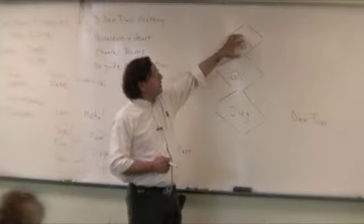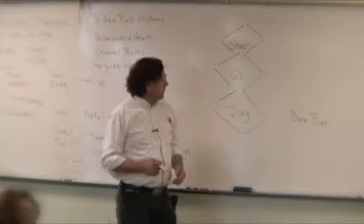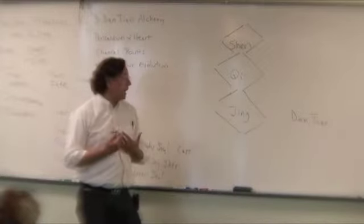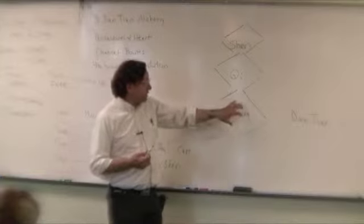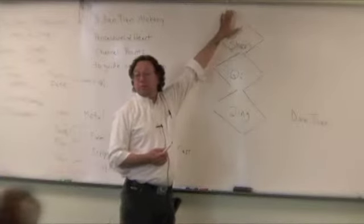And Qi is energy on the verge of becoming spiritual nature, or Shen. And Shen is spirit on the verge of becoming nothingness. And it turns out that the alchemy of our lives is turning Jing into Qi into Shen into nothingness.